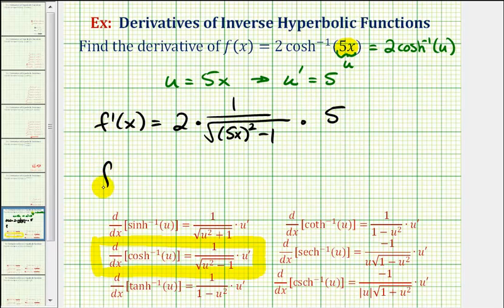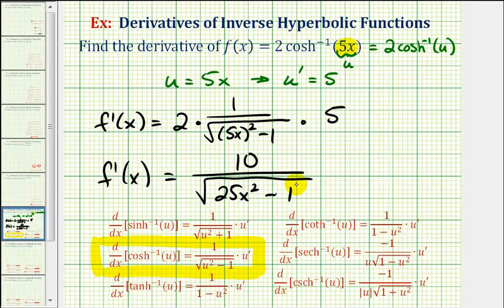Let's go ahead and clean this up. f prime of x is equal to two times five would be ten, divided by the square root of five x to the second would be twenty-five x squared, and then minus one. So this would be our derivative function.